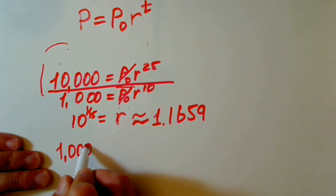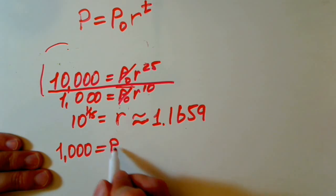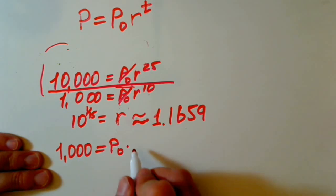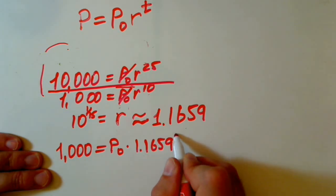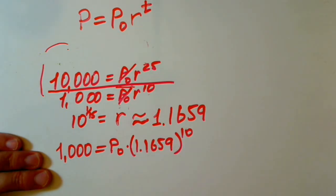And we have, let's take this one. 1000 equals initial population times r, we know already, 1.1659 raised to the 10th power. And what is our initial population?